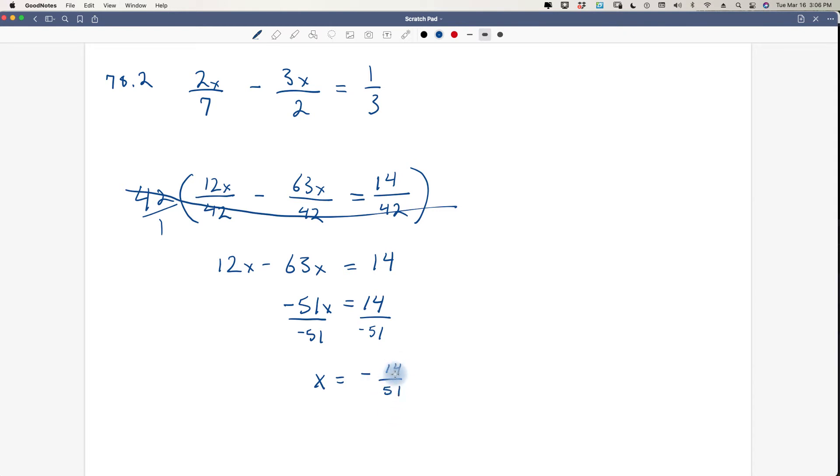So x equals a negative 14 over 51. 14 could be reduced by 2 or 7. 51, I don't think it can be. Let's see, can we divide 51 by 7? No. And it's not an even number, so we can't divide it by 2. So that's our final answer. I'm not going to check this for you. I'll let you do that on your own if you want, because I have the book right in front of me and that's the answer, so I'm confident it's correct.